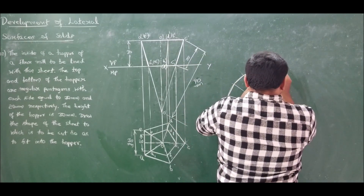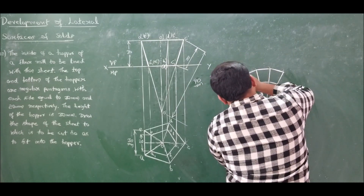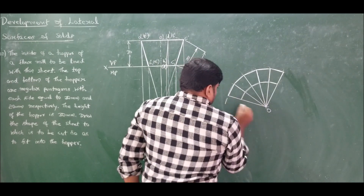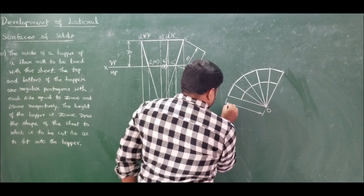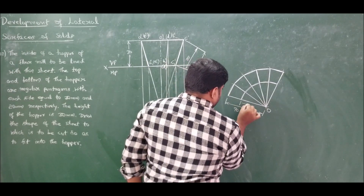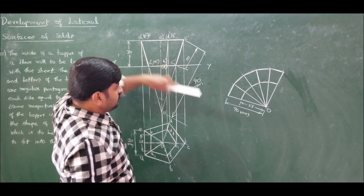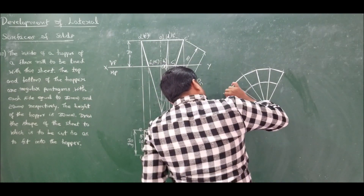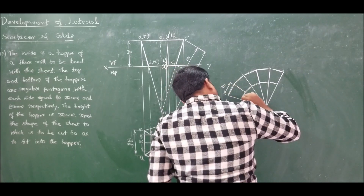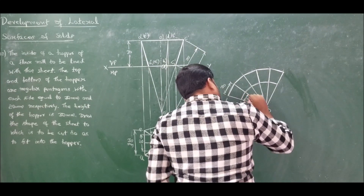This is the required development. The outer arc radius is 90 mm and the inner arc radius is 58 mm (since from top it is 32 mm and from bottom it is 58 mm). Each side of the outer edge measures 30 mm and each side of the inner edge measures 20 mm.